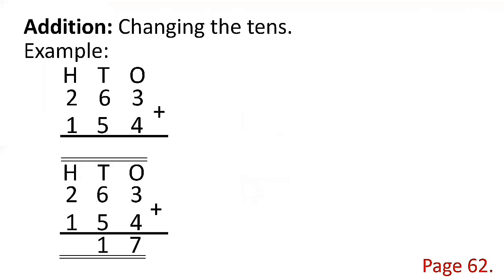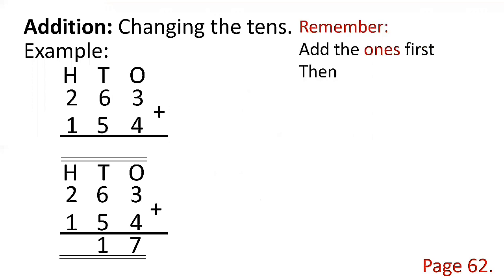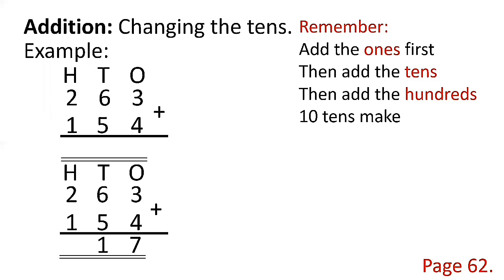Okay, let's go to page 62: addition changing the tens. Example: 263 plus 154. Remember: add the ones first, then add the tens, then add the hundreds. And 10 tens makes 100.